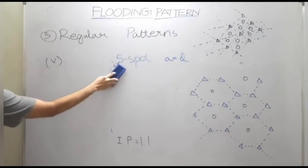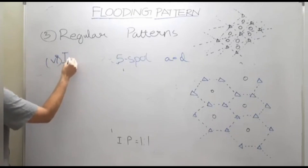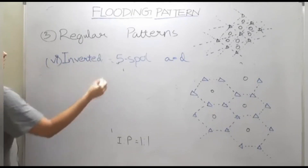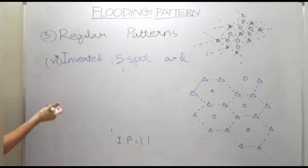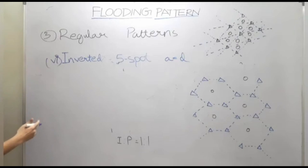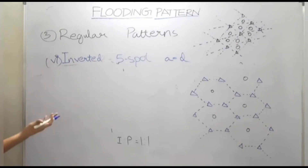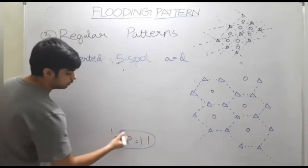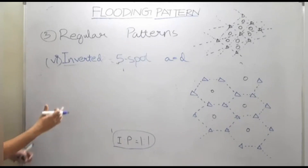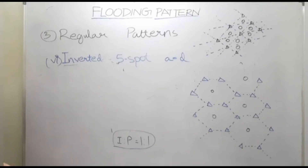Instead of 'regular,' they may write 'inverted.' In the case of inverted, all the injector wells get converted to producer wells and all producer wells get converted to injector wells. The inverted five-spot pattern and the regular five-spot pattern remain the same because the number of injector and producing wells is the same — only the location changes. In an overall field view, the pattern remains the same.